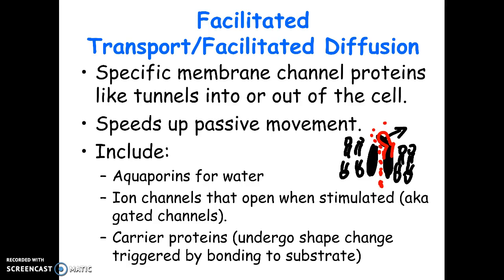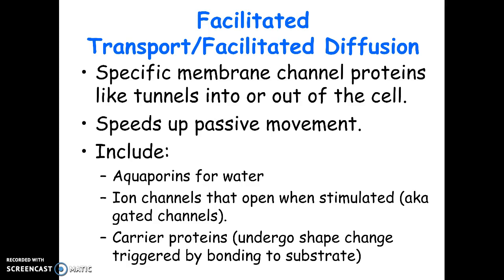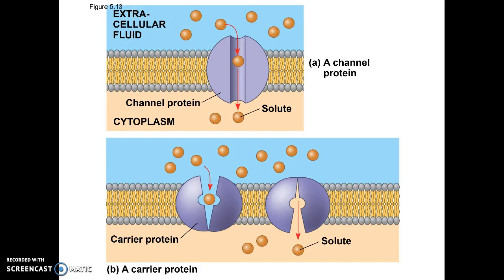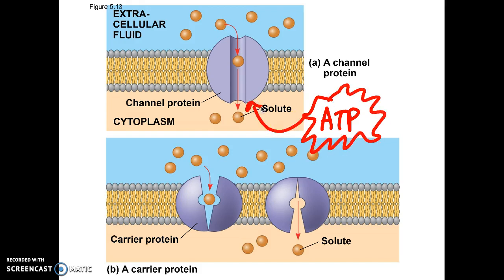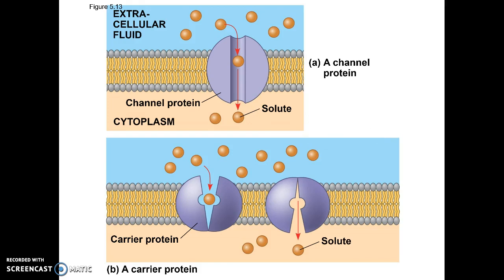Carrier proteins look a little different because they change their shape when letting something through. A channel protein looks more like a tunnel — still going higher to lower, no energy required. A carrier protein tends to mold around the molecule and change shape to let it through. If you don't see anything about energy in the picture and notice more molecules on one side going to where there's less, that represents facilitated diffusion.